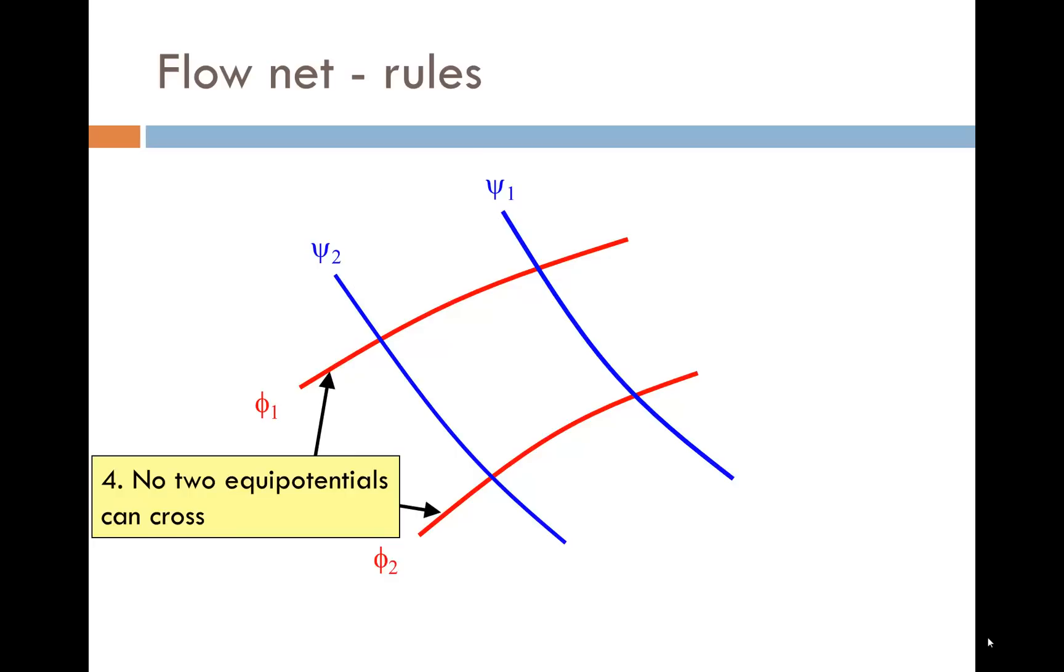Number 4: No two equipotentials can cross, as no one point can have two different values of total head.